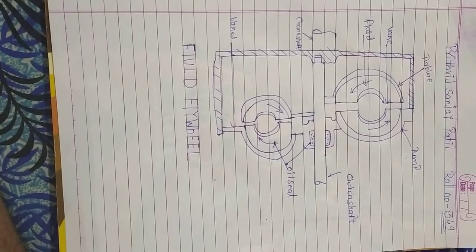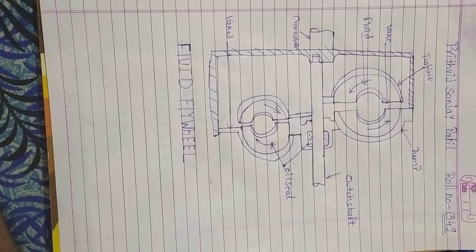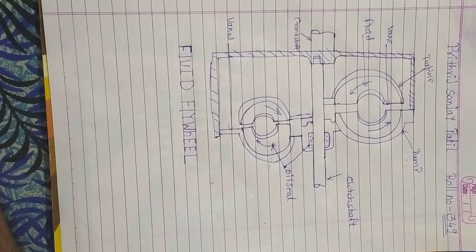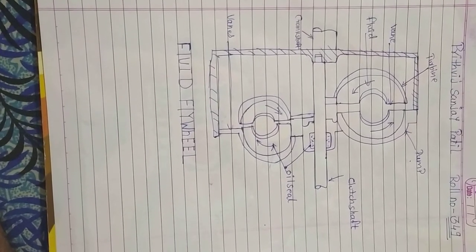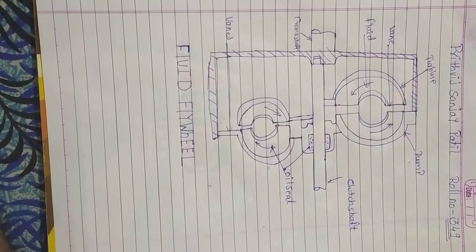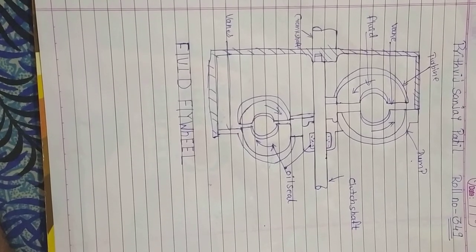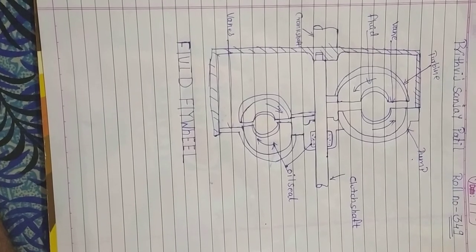There are many components in flywheels: fluid pump, turbine, and then in the middle side the clutch shaft is placed. While rotating the fluid in this turbine, some kind of energy is created.